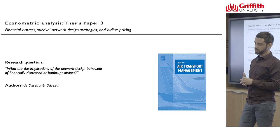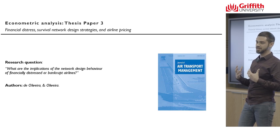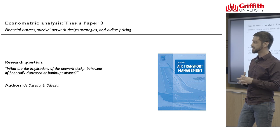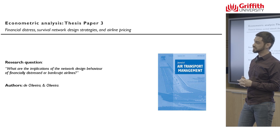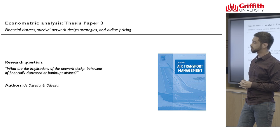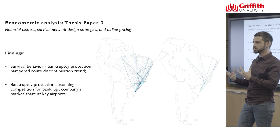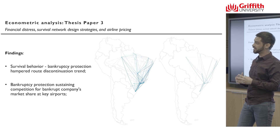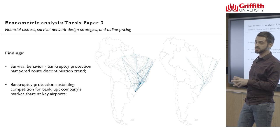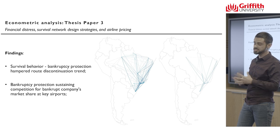In this other paper we looked at how an airline's network design is influenced by its financial distress and by being under bankruptcy protection. We used linear models and discrete choice models to analyze the route entry decisions of the airline, using data from Brazil. We noticed that an airline adjusted its networks by reducing its operations as its financial situation worsened, and by expanding it back again under bankruptcy protection, highlighting the role of bankruptcy protection in maintaining competition for the bankrupt carrier's market shares at key airports.